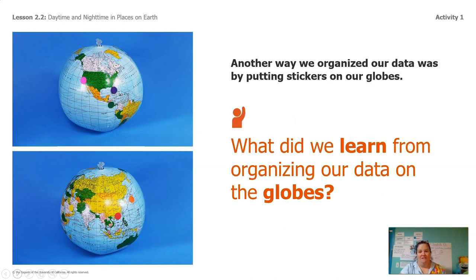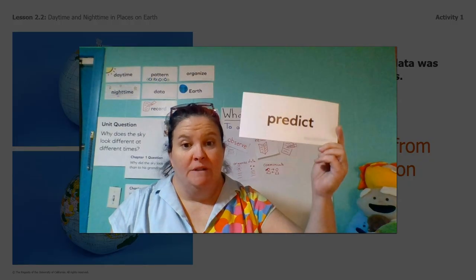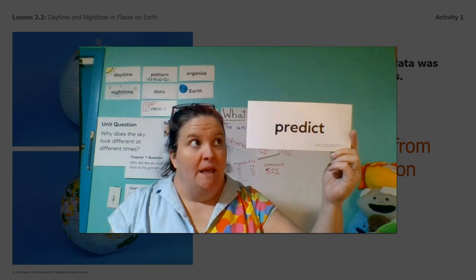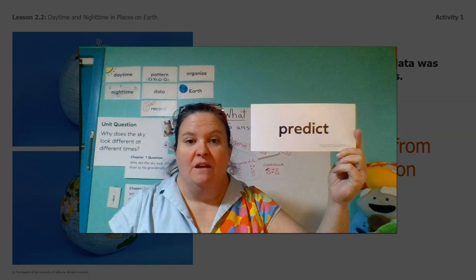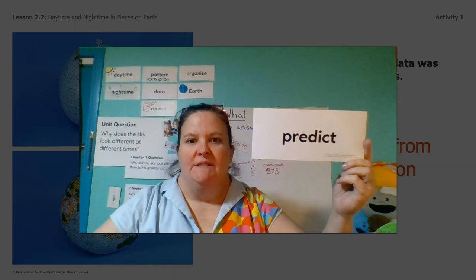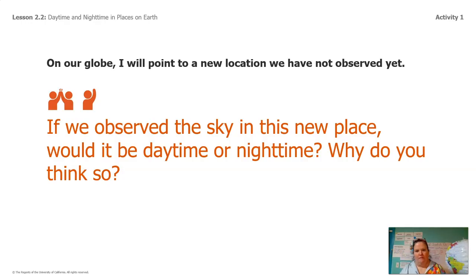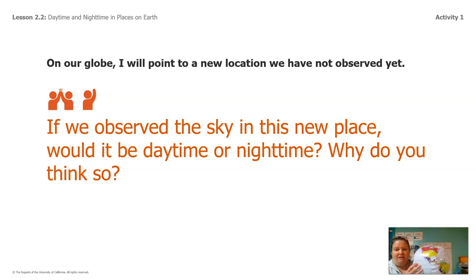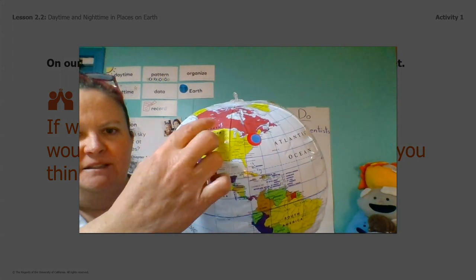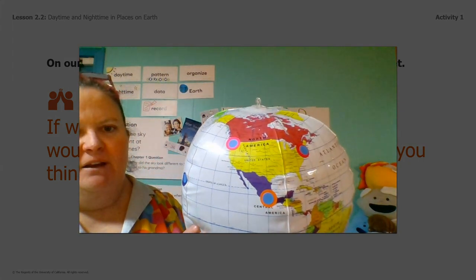A prediction is when you use what you know to make a really good guess about what you think could happen later. It's when you use what you know to figure something else out. So we're going to make a prediction together, following up on the pattern that Lavender noticed — that all these places close together on the globe are showing daytime.